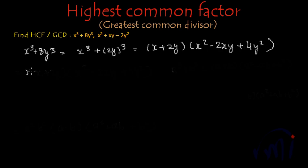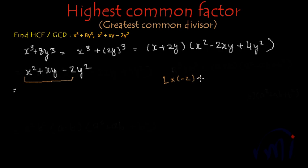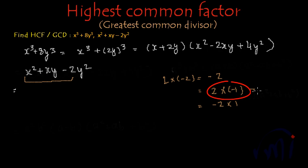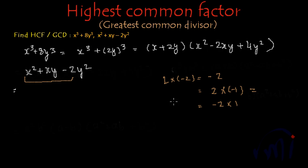Now let's find the factors of x square plus xy minus 2y square. To factor this kind of expression, we multiply the coefficients of the first term and the last term: 1 multiplied by minus 2 equals minus 2. The factors of minus 2 can be 2 multiplied by minus 1, or minus 2 multiplied by 1. Adding the first pair gives plus 1, so we use that set.